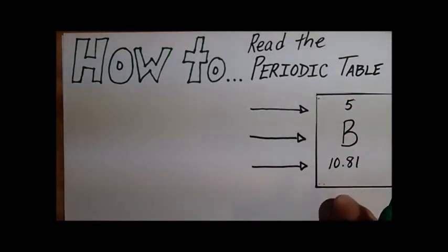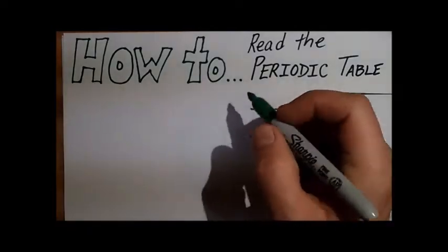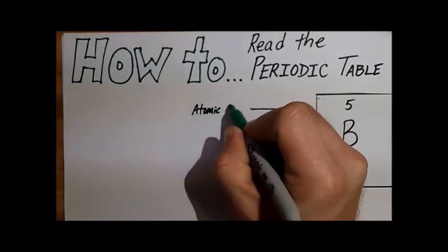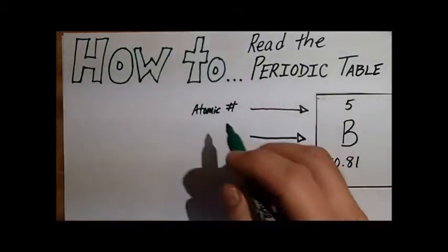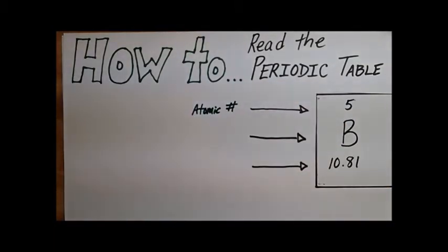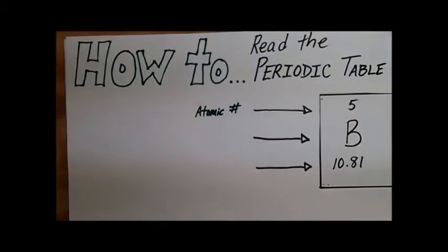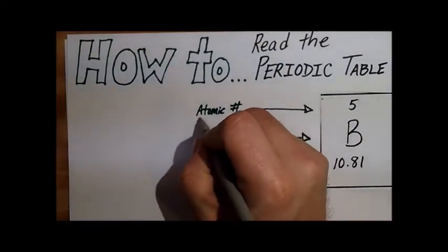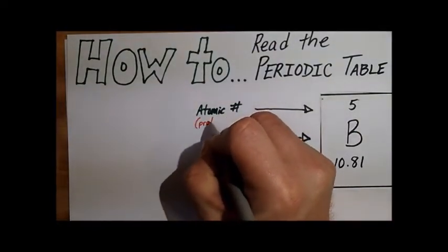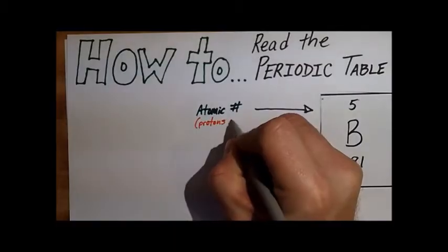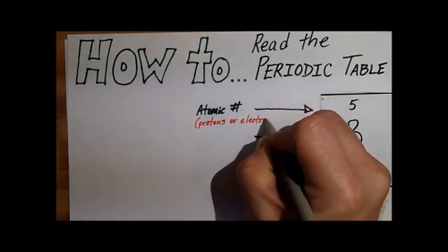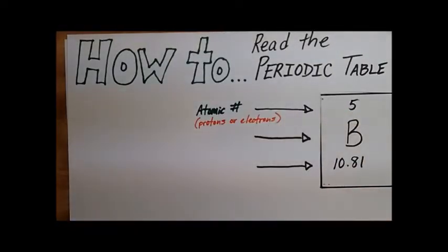You're going to see these numbers. The top number is called the atomic number, and that tells you the number of protons that would be in that element. It also gives you the number of electrons.